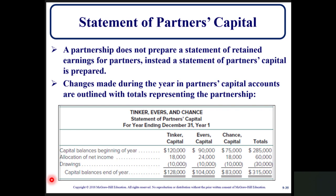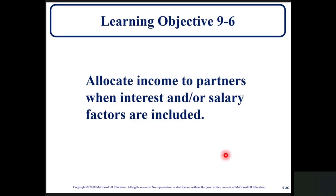Statement of partner's capital: a partnership does not prepare a statement of retained earnings; instead, a statement of partner's capital is prepared. Changes made during the year in each partner's capital account are outlined, with totals representing the partnership as a whole. For the Tinker, Evers, and Chance partnership for the year ending December 31, year one: beginning capital balances, allocation of net income, and drawings are shown. Tinker's ending capital account is $128,000, Evers's is $104,000, Chance's is $83,000, and the total ending capital balance for the year is $315,000.